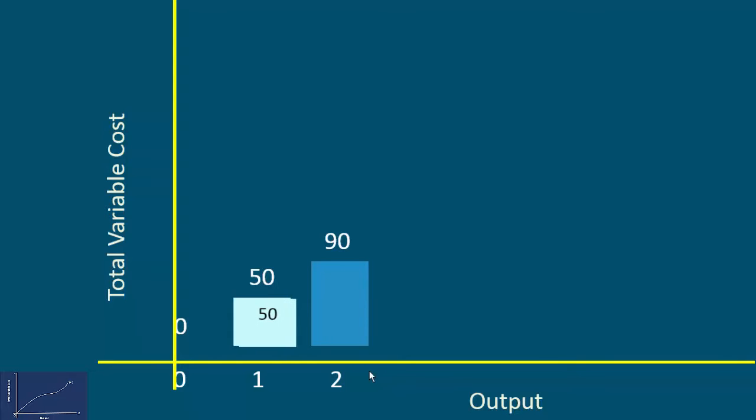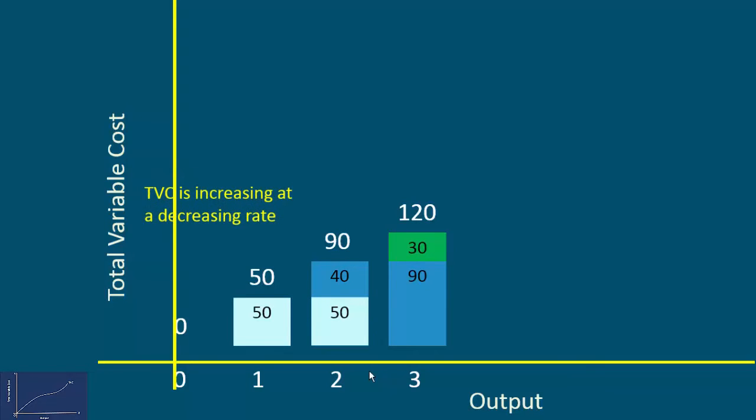The rate of increase is 40 rupees. The total variable cost of 3 units is 120 rupees. The rate of increase is 120 minus 90, 30 rupees. We must understand the rate decreases continuously from 50 rupees, 40 rupees and 30 rupees. So, in this range, TVC is increasing at a decreasing rate.